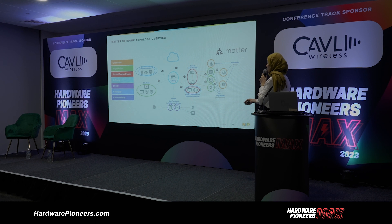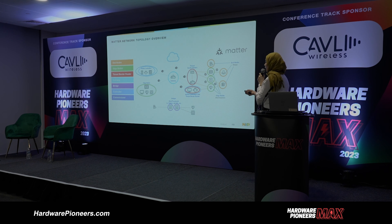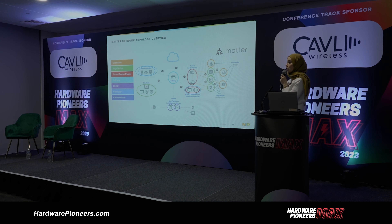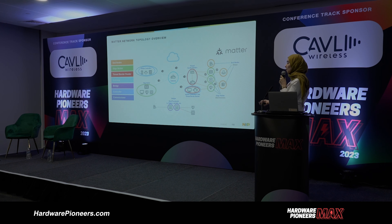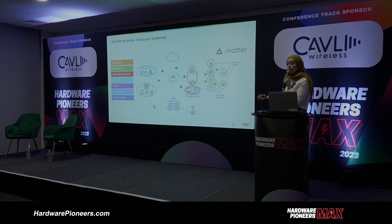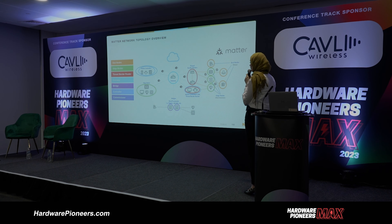You have the Thread border router, which connects the Thread network to the Wi-Fi network. It can also have a Matter controller integrated into a pre-existing device such as a voice system. Then you have a gateway, which links Matter over Wi-Fi to the cloud and the different cloud providers. A bridge translates between the Matter network and legacy devices — like a ZigBee network or sub-gigahertz non-IP-based protocols. Finally, controllers and commissioners, such as tablets or smartphones, are used to provision devices into the network.